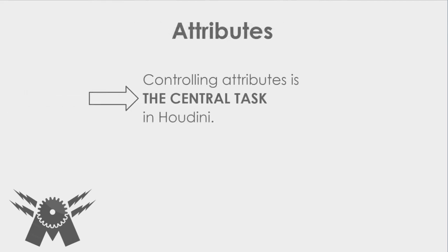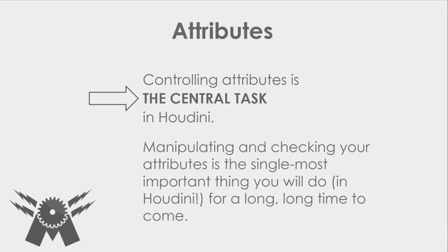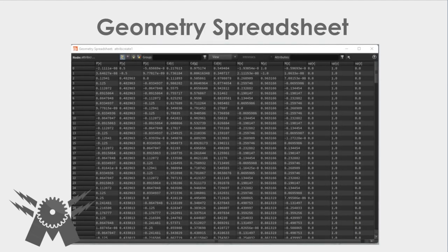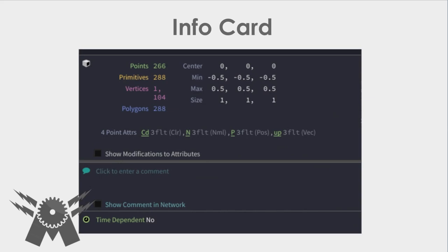Controlling attributes is a central task in Houdini. Manipulating and checking your attributes is the single most important thing you will do in Houdini for a long, long time to come. This is the whole essence of Houdini and what gives it its power. Get to know the geometry spreadsheet — you should always have a geometry spreadsheet visible. Middle click on your nodes and always be looking at what kind of attributes they have or don't have.